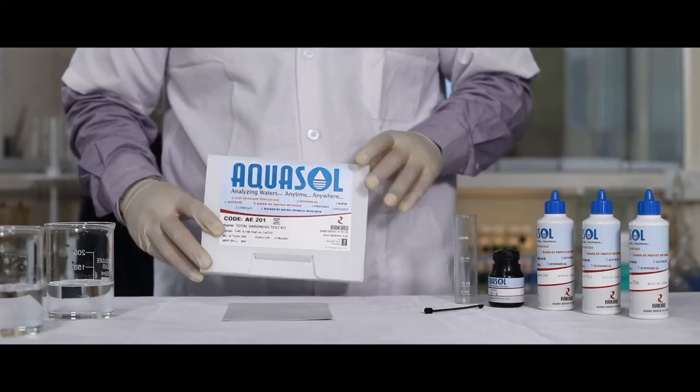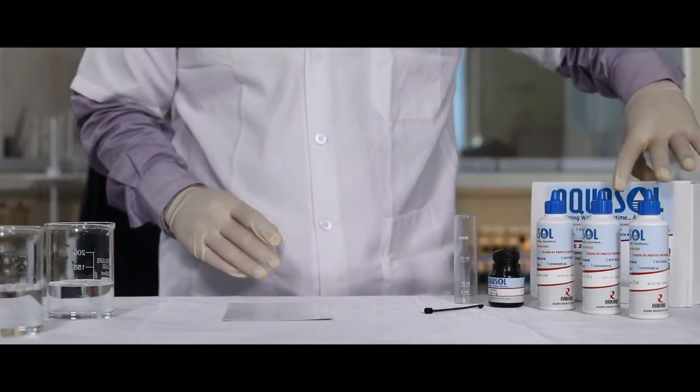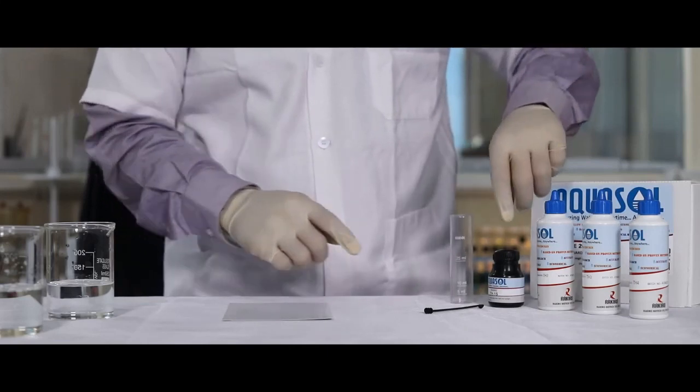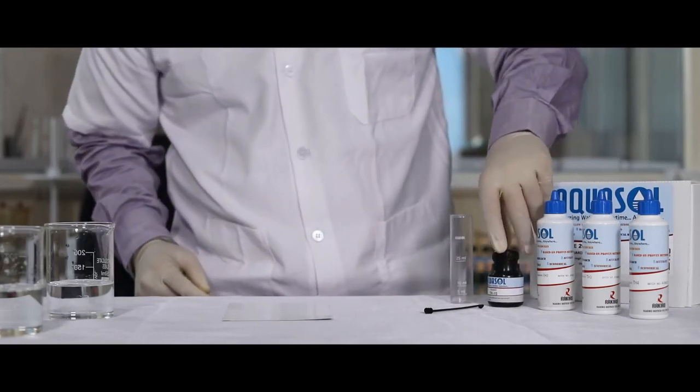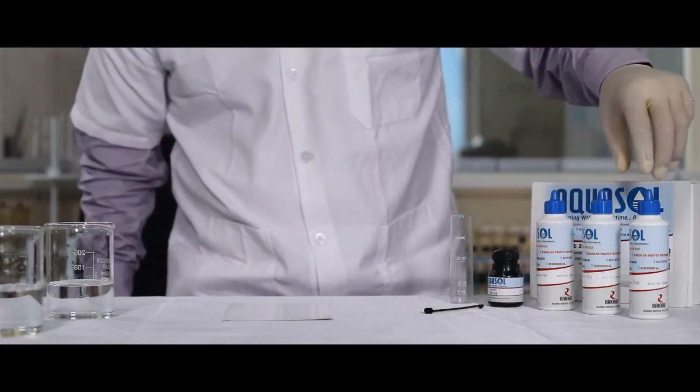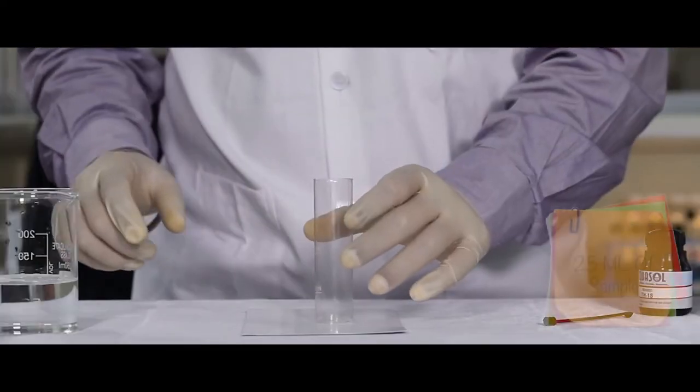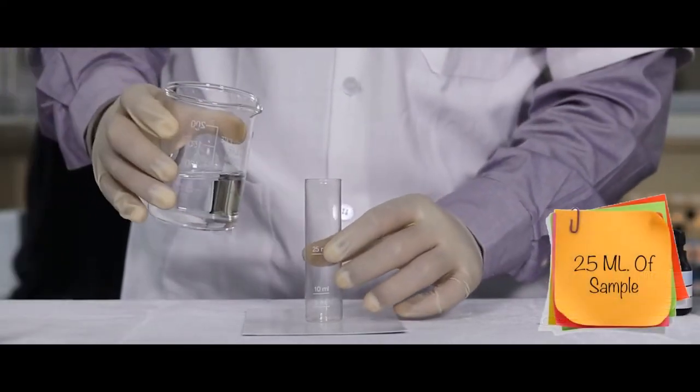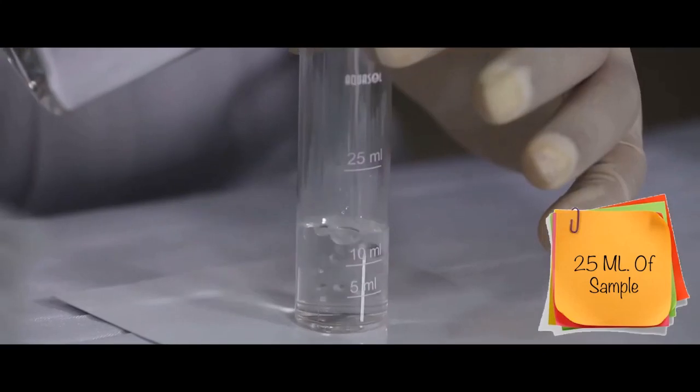This kit is used to check the hardness of the water. The kit contains a test jar, TH1S, TH2, TH3, and TH4. Now take the test jar and fill the sample up to the 25ml mark.